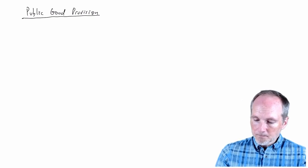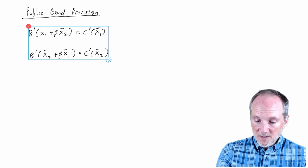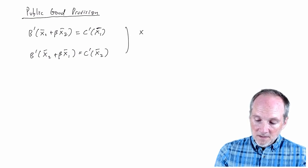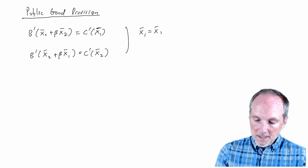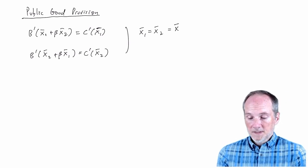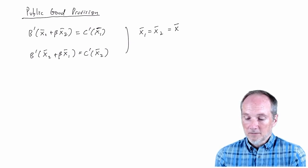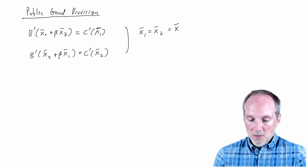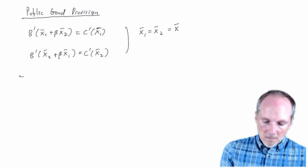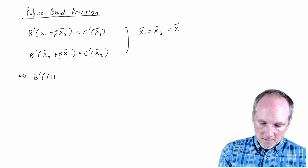So the first order conditions for the decision makers problems that we looked at was the following. But remember, we also showed that this equilibrium has to be symmetric. So in fact, let's just since the two activity levels are the same, we don't have to have subscripts on them anymore. Let's just use X bar for the symmetric or the equilibrium activity level of both of the decision makers.